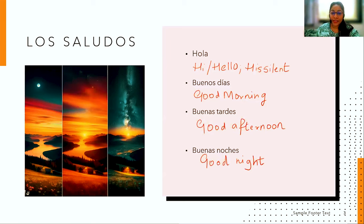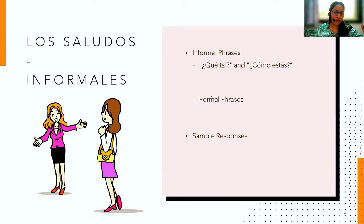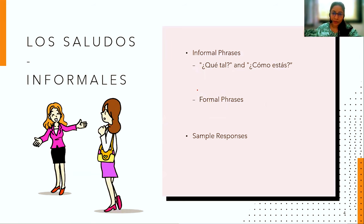Now that we've greeted someone, our next question in small talk is usually 'how are you,' 'what's up,' or 'how's it going.' We're going to look at two different sets of phrases — informal and formal. Informal phrases are used when talking to your friends, someone your age, or someone younger than you.